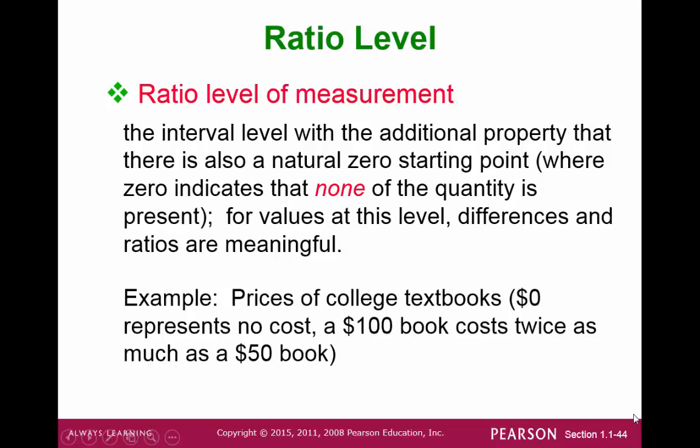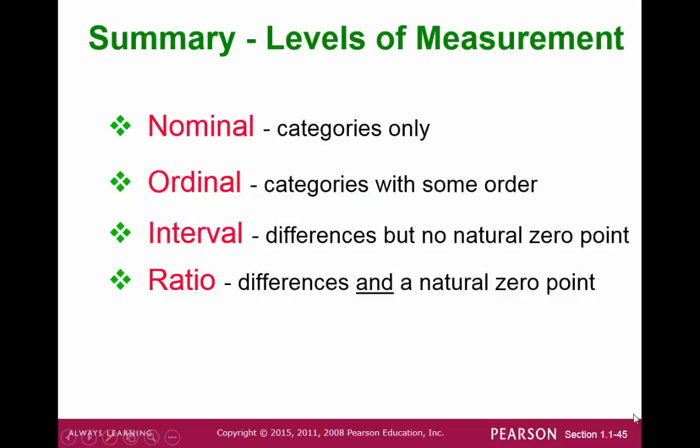The highest level of measurement is the ratio level, which is essentially an interval level with the additional property that a zero or starting point is defined. One way to look at the ratio level is that you can make a comparison between two values and say that some value is twice the value of another. Here is a quick summary of our four levels of measurement.